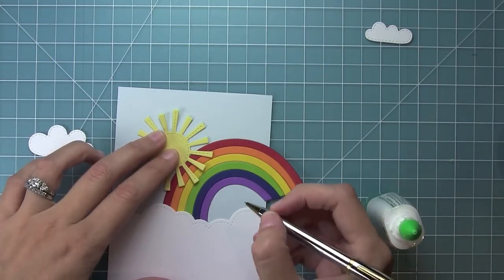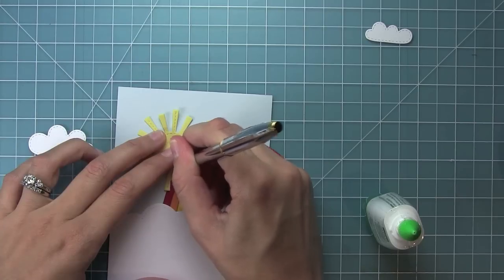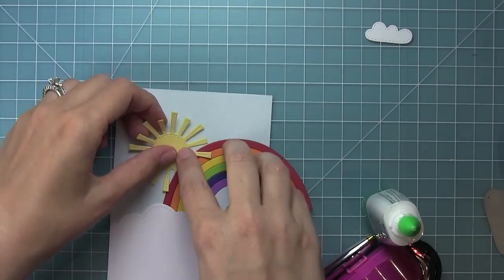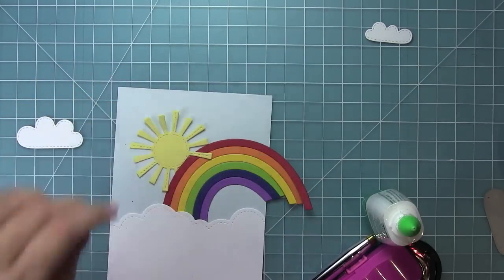Now here I wanted the sun to look like it was coming from behind the rainbow, but I forgot to glue the sun down first. So what I decided to do was just use a pencil to mark what parts of the sun I wanted to be behind the rainbow and I just chopped those right off, and now it looks great.